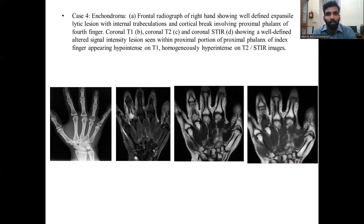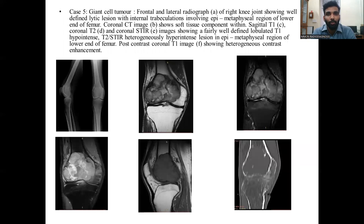Case of enchondroma. Frontal radiograph of the right hand shows a well-defined expansile lytic lesion with internal trabeculations and cortical break involving the proximal phalanx of the index finger, appearing hypointense on T1 and homogeneously hyperintense on T2 and STIR images.